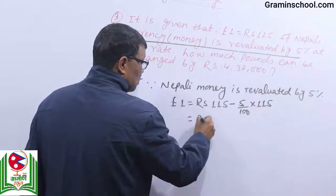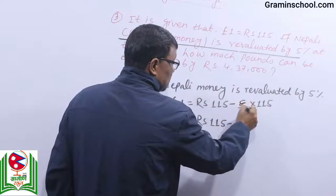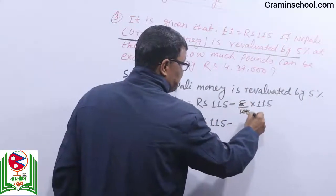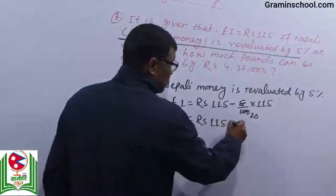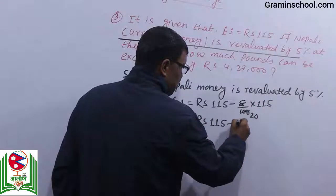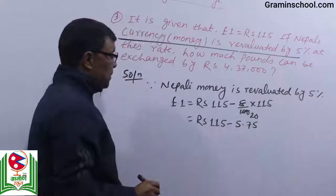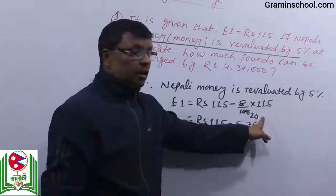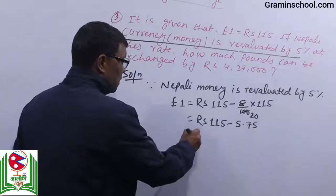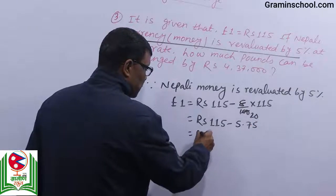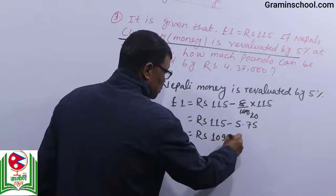5 by 100 into 115. The calculation is 115 minus 5.75. 115 divided by 20 is 5.75. So the new rate is Rs. 109.25.